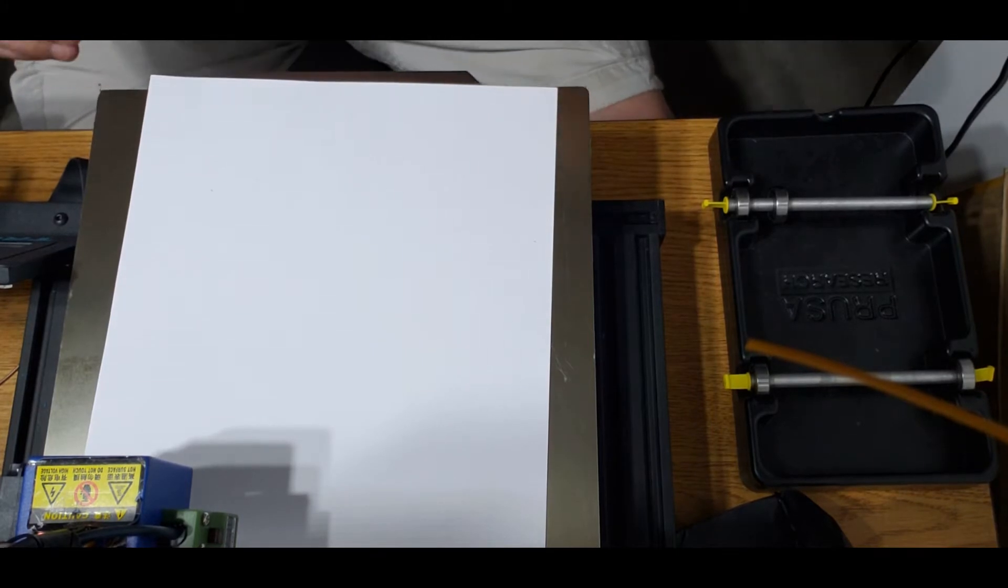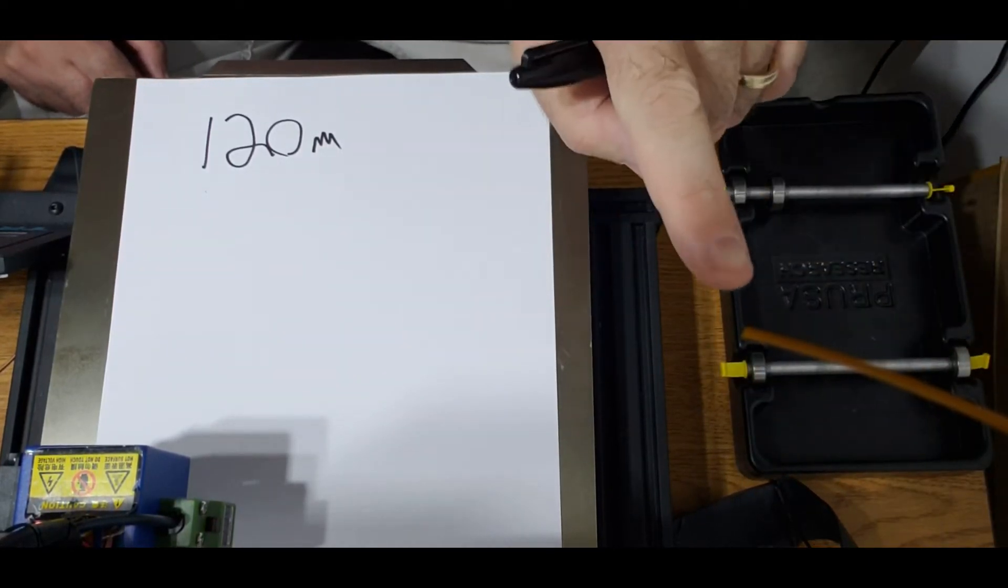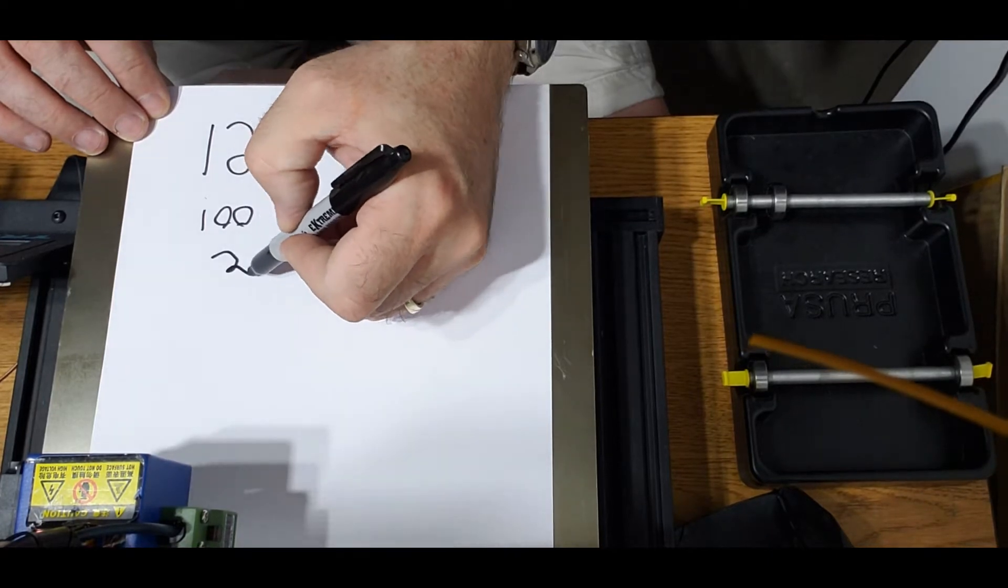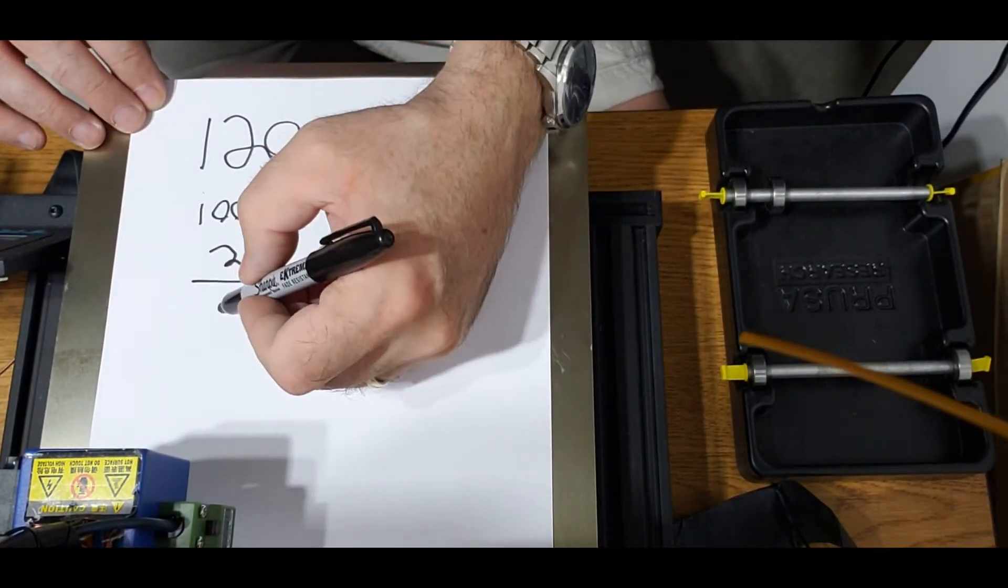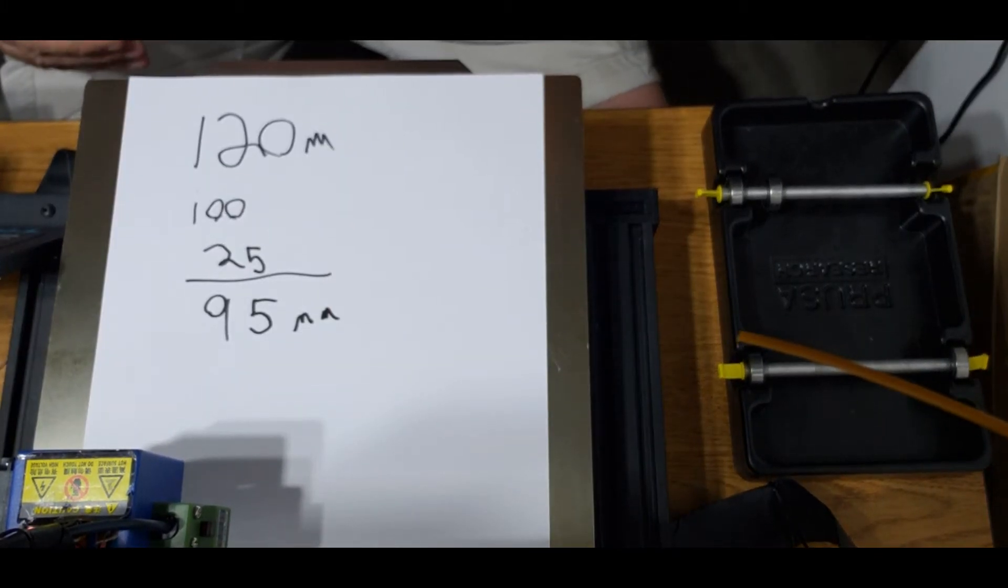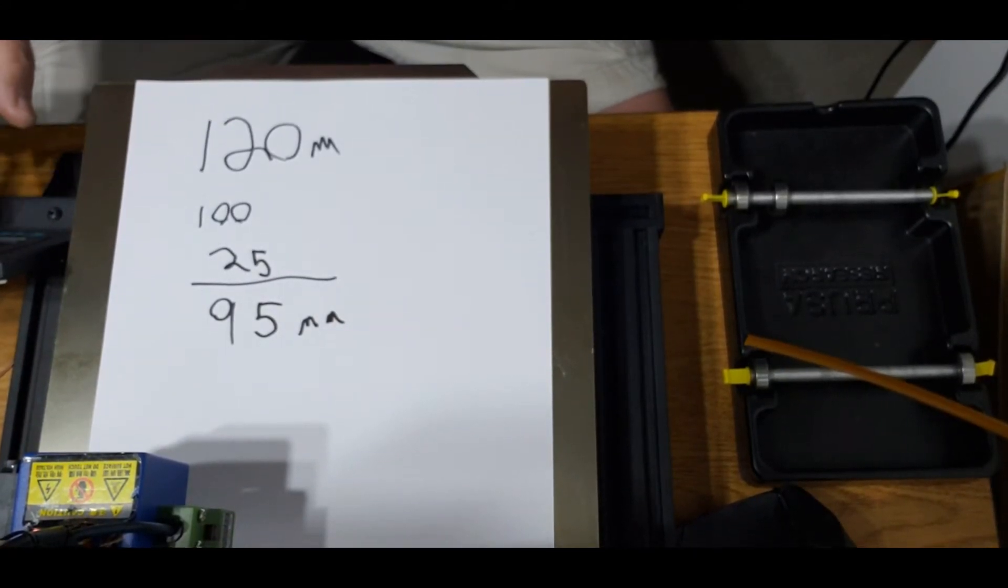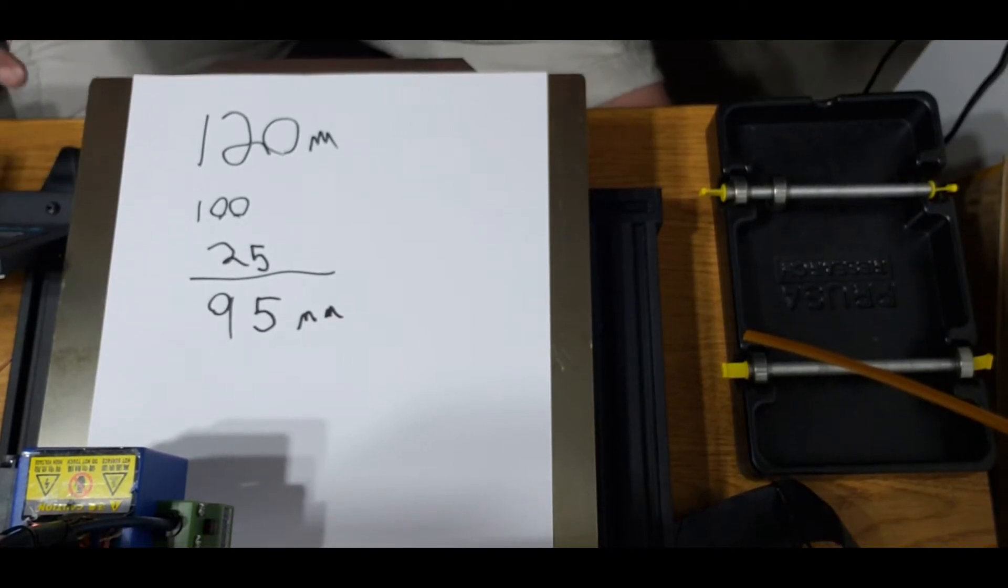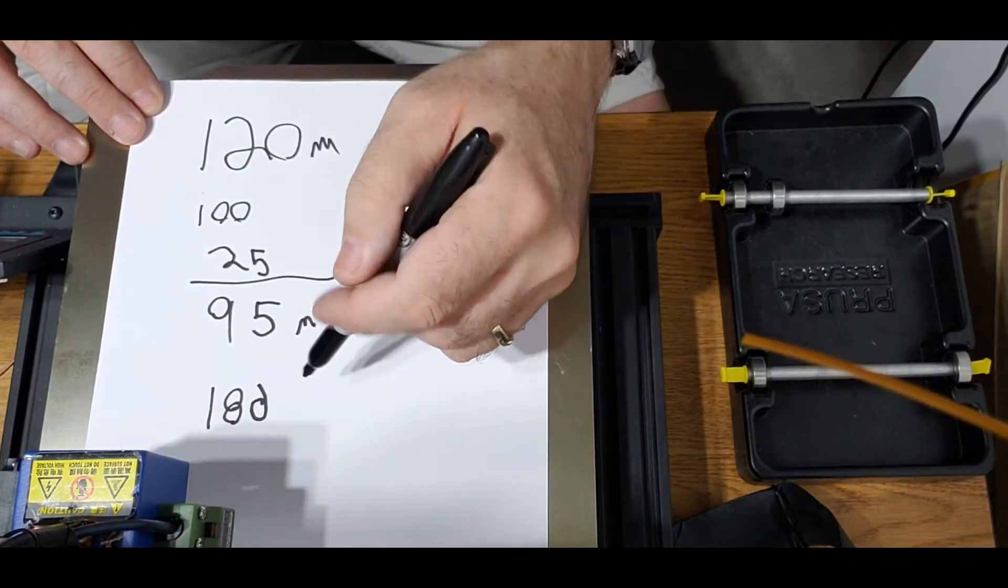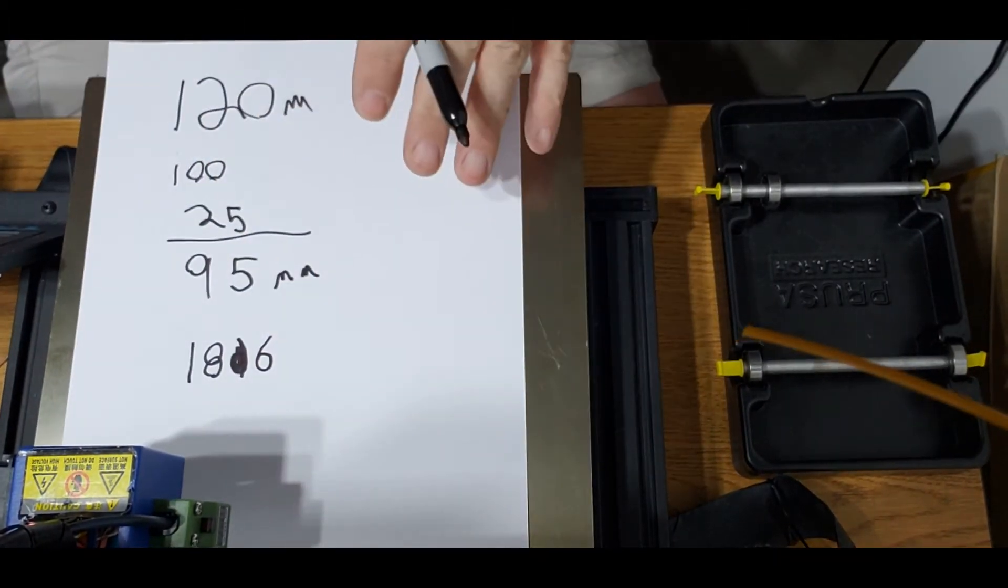Let's try and do this upside down and backwards. I had 120 mils that I marked on my filament. I then extruded 100, and I had 25 remaining. So in reality, I only extruded 95 mils of filament. Then what you have to do is go into your Configuration, Advanced Settings, Steps Per Mil, and find what your E-steps are. My current E-steps are 186. Those are my E-steps.